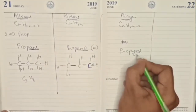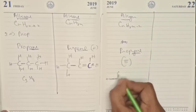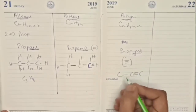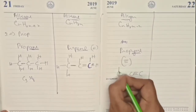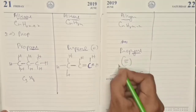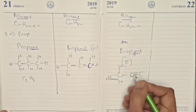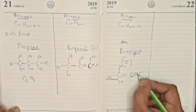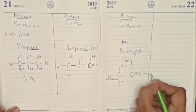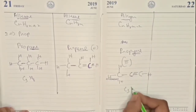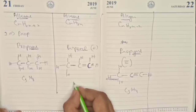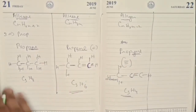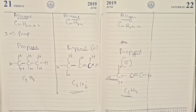Propyne has a triple bond — -yne means triple bond, and prop- means three carbons. The triple bond is placed at the beginning or end of the chain. The first carbon has one bond with hydrogen and the triple bond. The middle carbon already has all four bonds used in the triple bond — no hydrogen needed. The last carbon has the triple bond and one bond with hydrogen. Propyne is C3H4. So to recap: propane is C3H8, propene is C3H6, and propyne is C3H4.